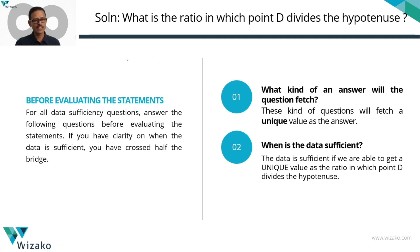We'll have to find out. We'll have to come up with a ratio saying that the ratio is 1 is to 2, ratio is 4 is to 7, something like that. If you're able to come up with a unique value for the ratio, then the data is sufficient.